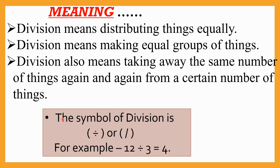Now, what about the division symbol? There are two symbols we use when solving division sums: one is a dash with two dots (÷), and the other is a slash (one line /). For example, when you write 12 ÷ 3 = 4, you read it as: 12 divided by 3 is equal to 4.